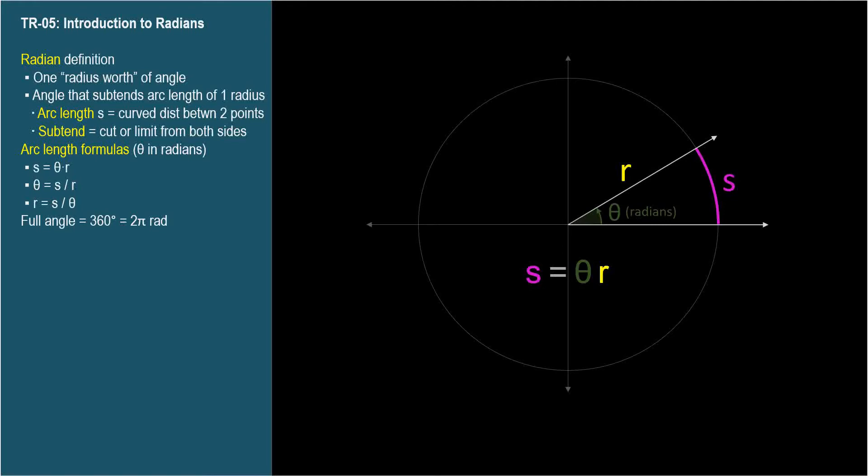Arc length s equals theta times radius. We can rewrite this equation to isolate theta. Theta equals arc length s over radius r. And we can isolate radius: r equals s over theta. You only need to memorize one of these, from which you can derive the other two.